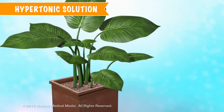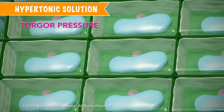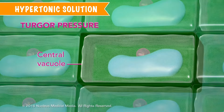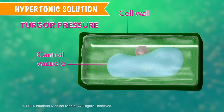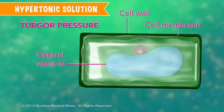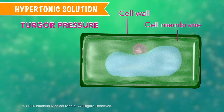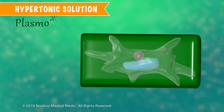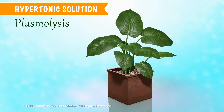Let's look at an example of plant cells in a hypertonic solution. Normally, turgor pressure — which is the water pressure in a plant cell's central vacuole — helps support the cell wall and overall plant shape. When water leaves plant cells by osmosis, the cell membrane and its contents shrink away from the rigid cell wall, and turgor pressure decreases. This is called plasmolysis, and it causes a plant to wilt.